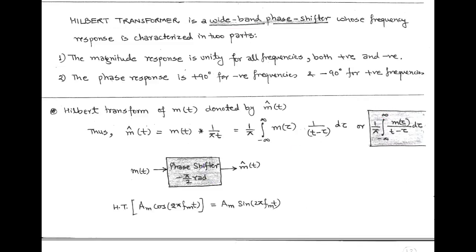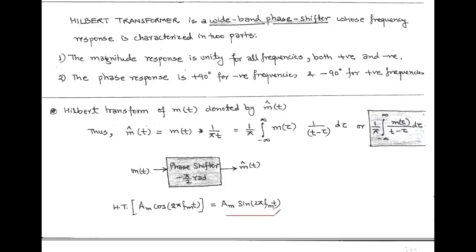By using the Hilbert transform, the cosine term of the message signal m(t) is shifted by minus 90 degrees and we get the sine term m̂(t). We can write: Hilbert transform of A_M·cos(2π·f_M·t) equals A_M·sin(2π·f_M·t).